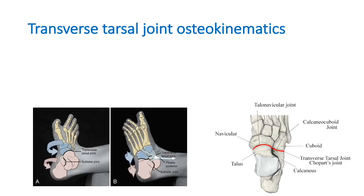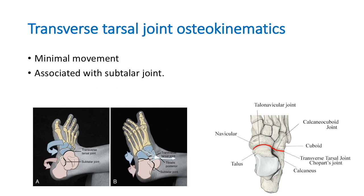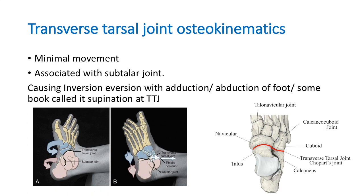Moving on to transverse tarsal joint osteokinematics. The movement here is adduction and abduction, which is minimal and occurs along with subtalar joint inversion and eversion. This combined movement of inversion and eversion along with adduction and abduction of the foot is also called supination and pronation. The transverse tarsal joint is formed between the navicular and talus — the talonavicular joint — and between the cuboid and calcaneus — the calcaneocuboid joint.